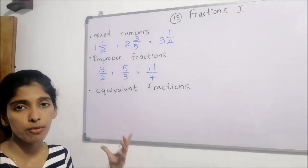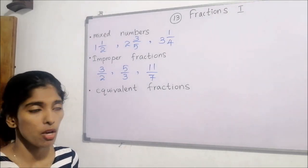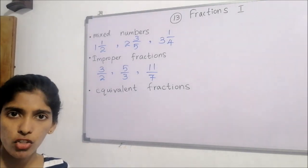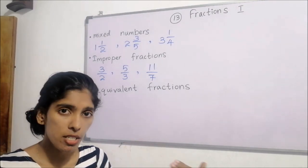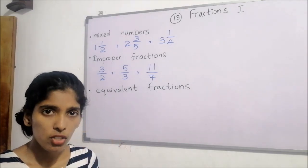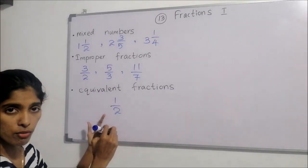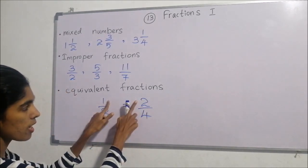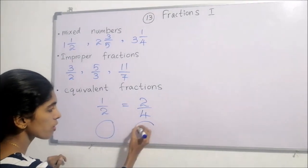The other concept we need to recall is equivalent fractions. The same fraction can be represented in different ways — the numerators are different, denominators are also different, but the fraction is the same. For example, one half and two fourths are equivalent fractions.